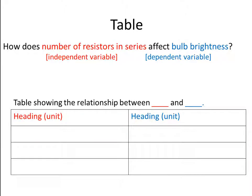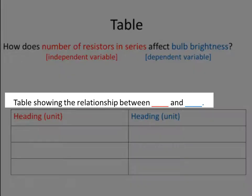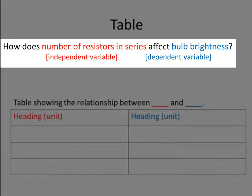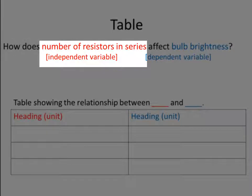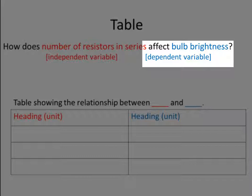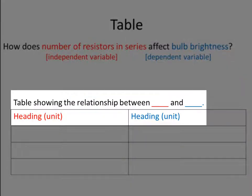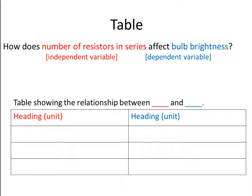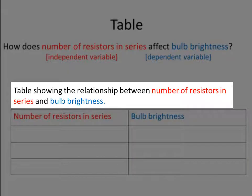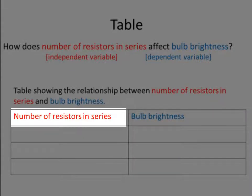Now we need a table to put our data in. A table needs to have a heading and each column needs a heading as well. Remember, our focus question is how does number of resistors in series affect bulb brightness? Number of resistors in series is our independent variable and bulb brightness is our dependent variable, so we must use those variables when we write the headings. The first column is for the independent variable — number of resistors in series — and notice we don't have a unit in brackets after the heading because there is no unit for a number.